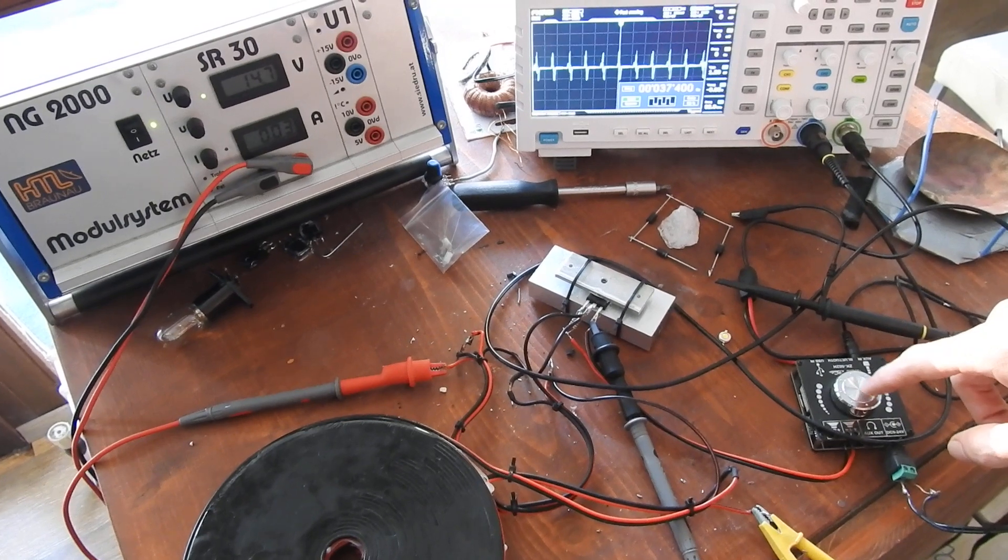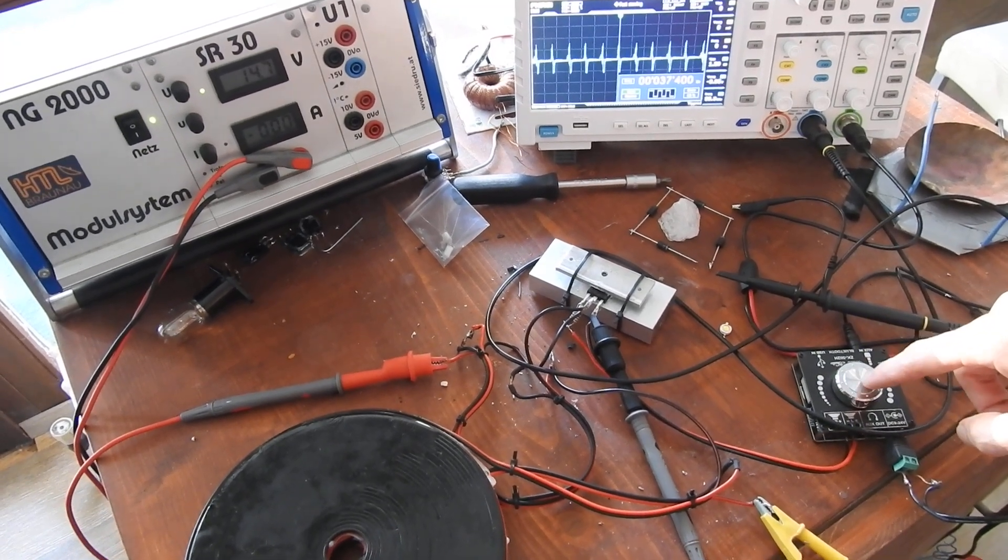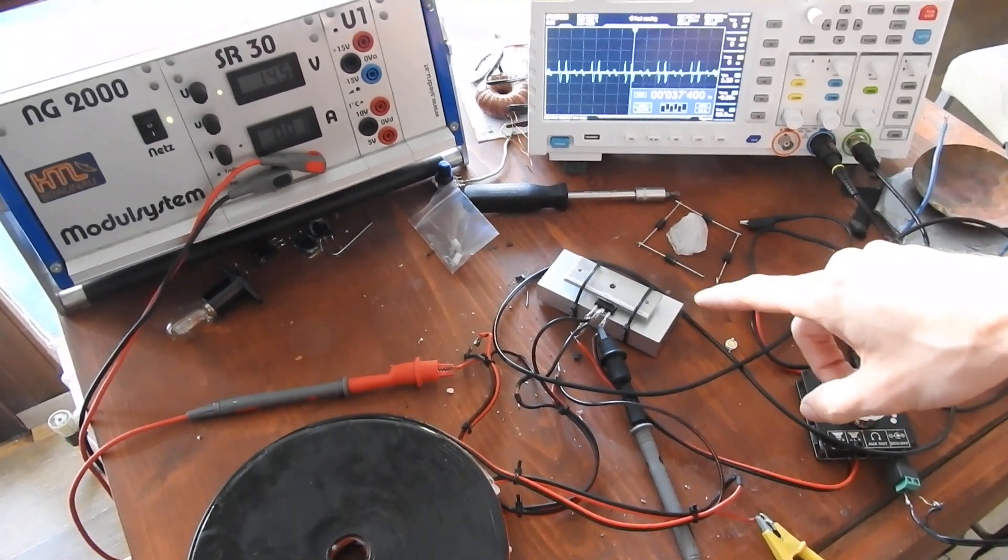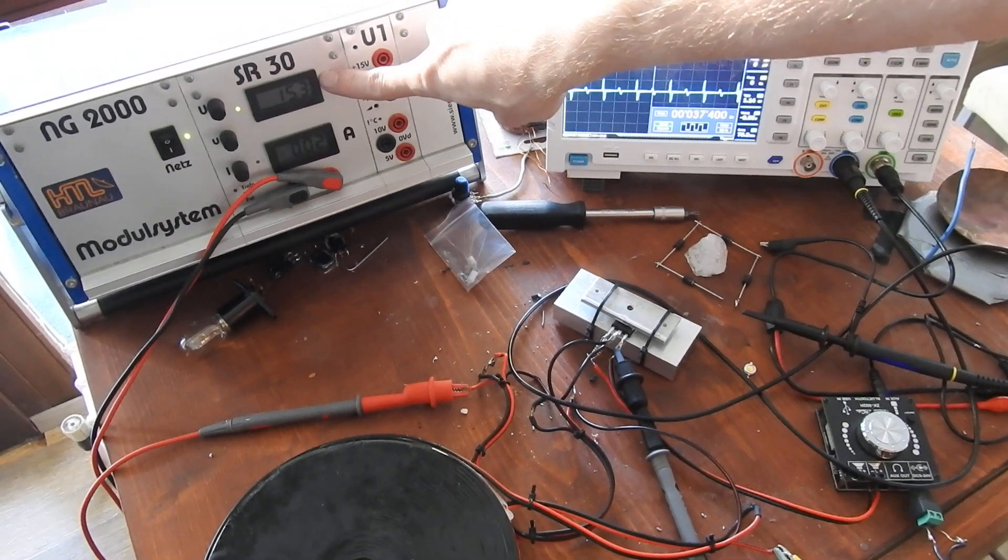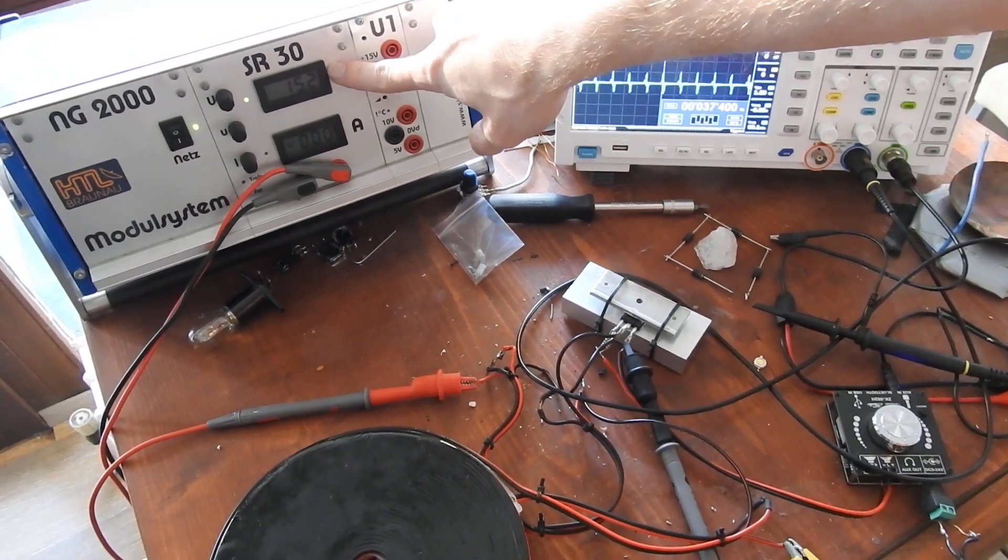The square wave signal gets amplified by this audio amplifier and it switches the DC voltage coming from my power supply.